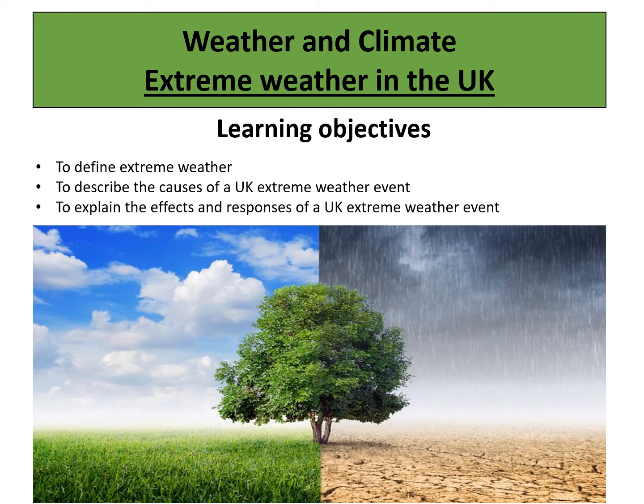Year 7, we are on the final section of the topic of weather and climate. Throughout this topic, we have looked at what weather and climate means. We've looked at ways that we can measure the weather through things like anemometers and weather vanes as some examples.